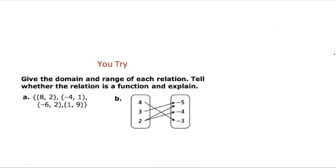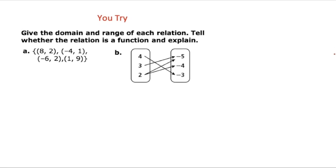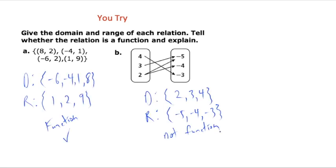Here are two problems for you to try: list the domain and range of each relationship, and say whether or not they are functions. On the first one, the domain was {-6, -4, 1, 8} with the range being {1, 2, 9}, and it is indeed a function. On the second one, the domain was {2, 3, 4} with the range being {-5, -4, -3}, and this one is not a function.